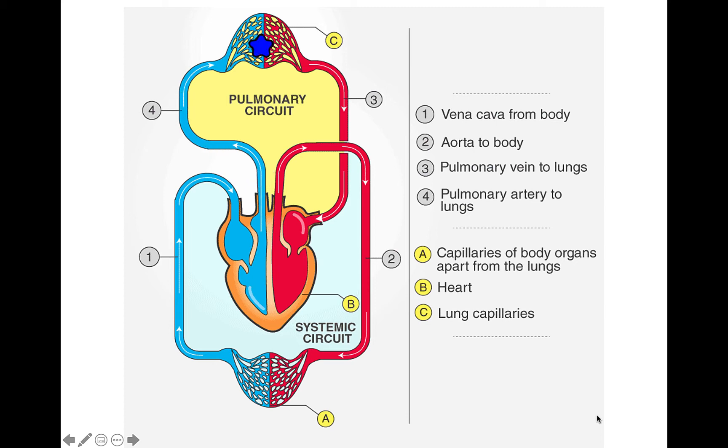The deoxygenated blue blood will travel to the lungs via the pulmonary artery. Note that the blood is traveling away from the heart, therefore it's traveling through an artery. This is the one case where an artery is carrying deoxygenated blood.